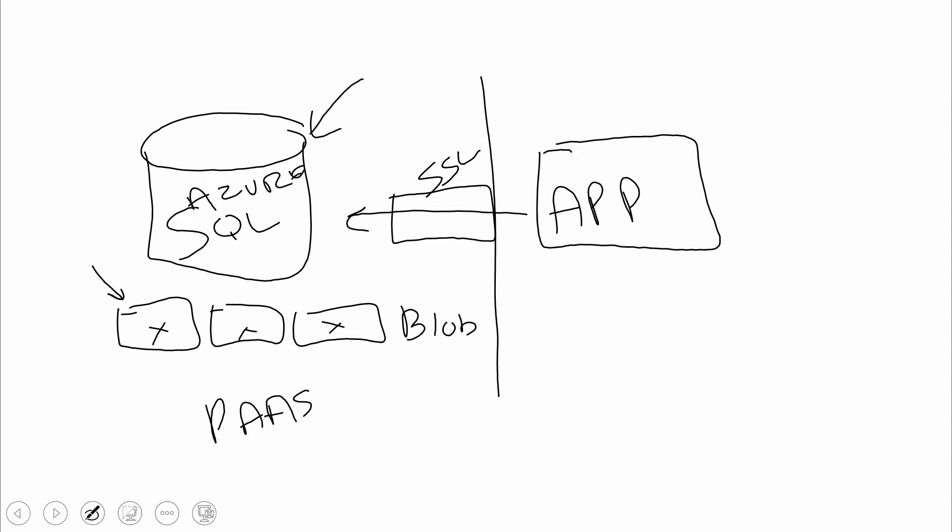A couple different things evolved out of that. The first one was TDE — Transparent Data Encryption — and I'll show you where these are turned on inside the portal. TDE is a server-side technology. Inside your Azure SQL database in the portal, you would enable this feature, turn it on, and then Azure will make sure that at rest it will encrypt your data sitting on that disk. To the application, it's transparent — it continues to access over SSL, nothing changes. If somebody were able to get a copy of that database, they would see garbage because it's transparently encrypted.